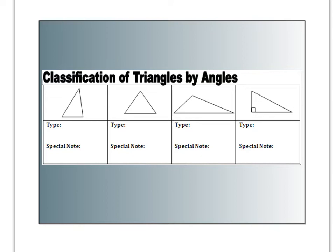All right, so the first triangle is an acute triangle. The special note is all angles are less than 90 degrees. I use the less-than symbol — you can write out the word if you want.